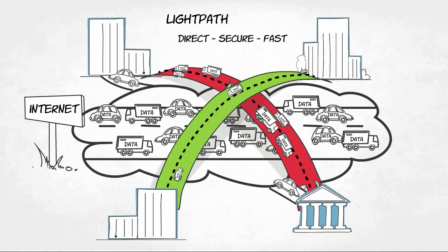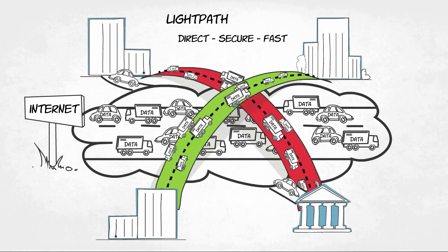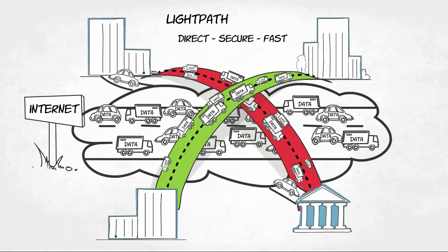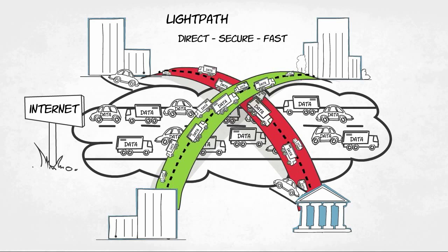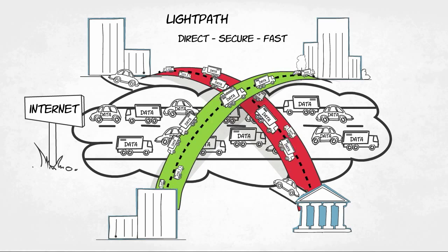A lightpath is a direct, secure, and fast data connection between two points. It can be compared to a private lane on a motorway, for example, without traffic jams or speed limits.